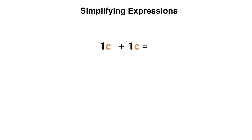The reason you don't commonly see the number one next to a variable is because one multiplied by anything doesn't change the value. But you can always write the number one in front of a variable that doesn't have a coefficient. In this case both terms are like terms since both have the variable c, so 1c plus 1c equals 2c.